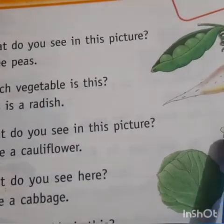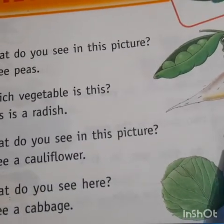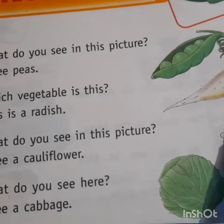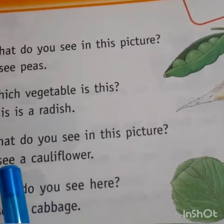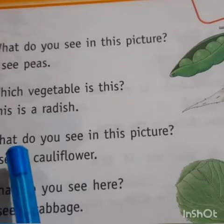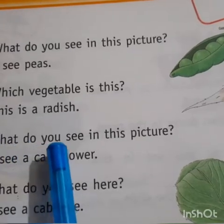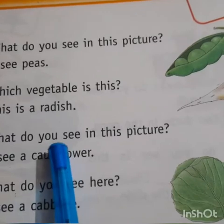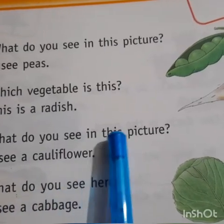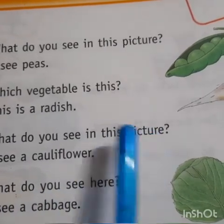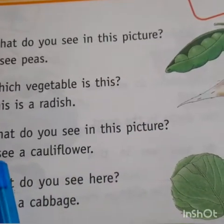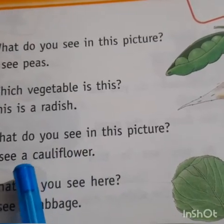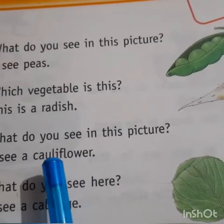Now look at this picture. See carefully, which vegetable is this? The next question is: what do you see in this picture? The answer is: I see a cauliflower.